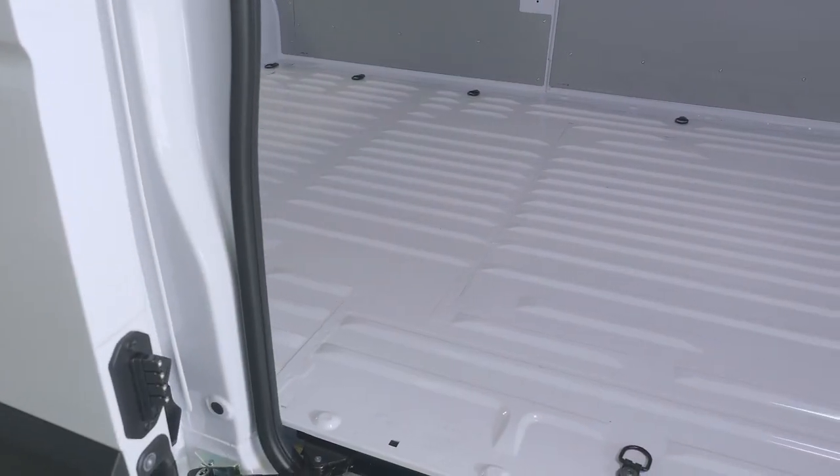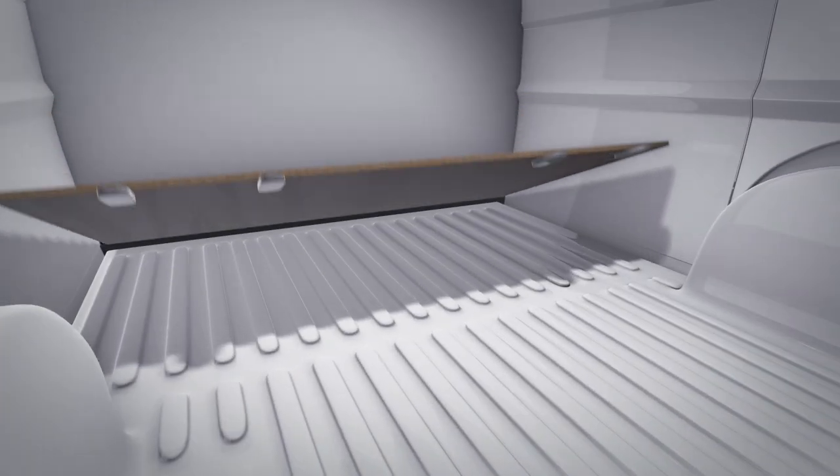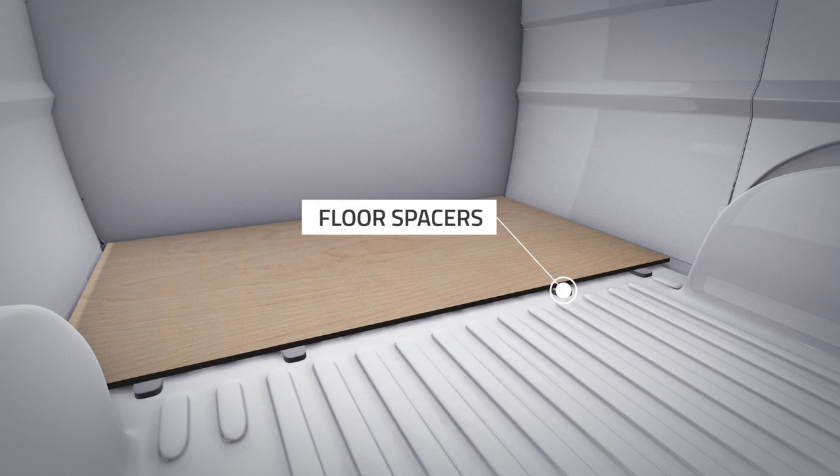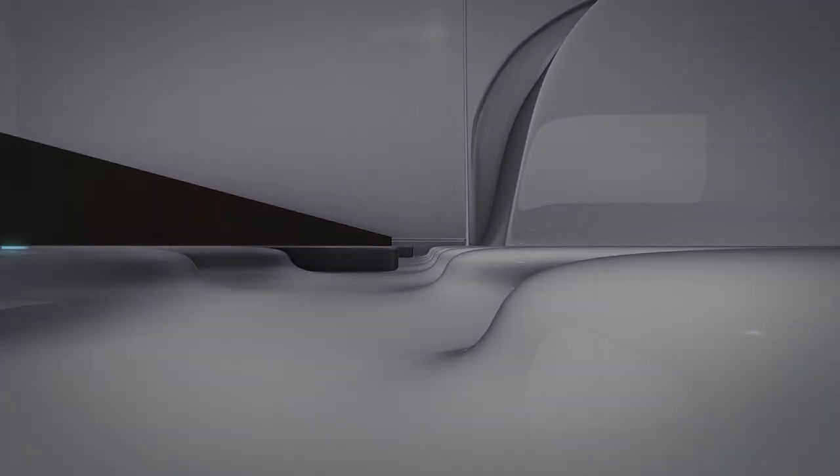Van floors are made from thin sheet steel panels reinforced by unevenly distributed ribbing. Because the spacers on the underside of the plywood panels are the same height as the original ribbing, the plywood layer is stronger and better able to support heavy loads.